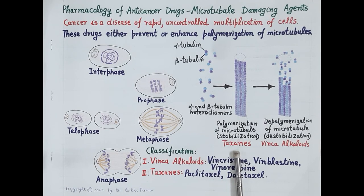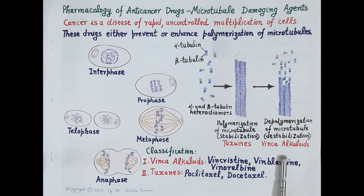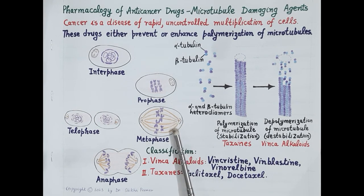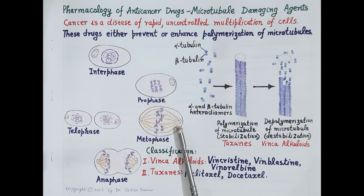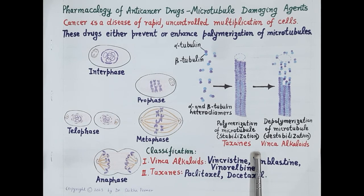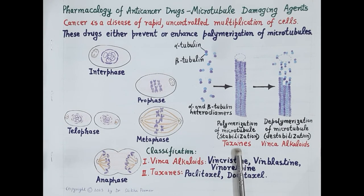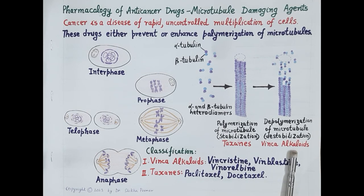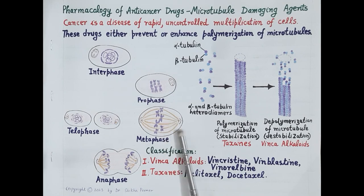On the contrary, drugs belonging to vinca alkaloids cause depolymerization and destabilization of microtubules, which prevents the formation of spindle fibers. Again, mitosis is prevented, the nucleus cannot divide, and cell division is prevented. In summary, microtubule damaging drugs either enhance and stabilize polymerization — preventing shortening of microtubules — or cause depolymerization and destabilization, preventing lengthening and thus formation of spindle fibers.